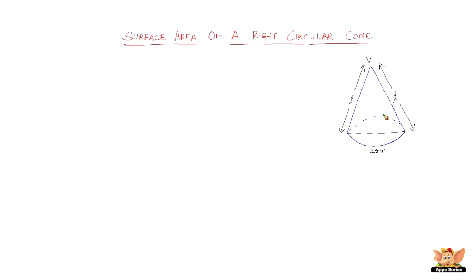Now that we've finished the introduction of the right circular cone, let us look into the surface area of a right circular cone. The surface area of a right circular cone is the surface area of the cone on the sides plus the area of the circle at the base.